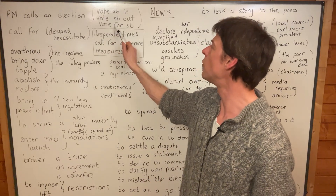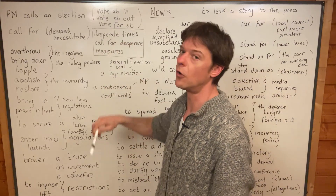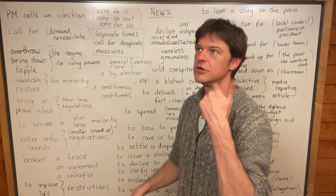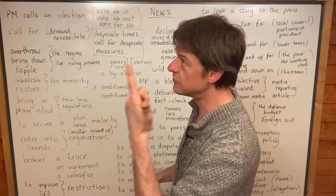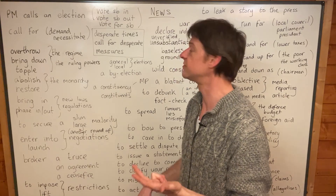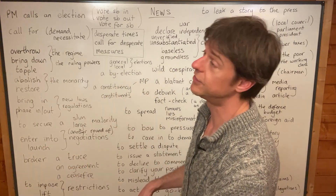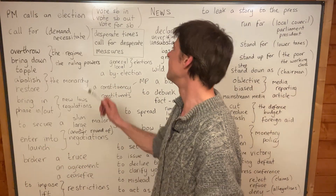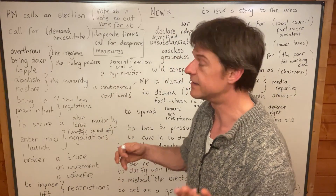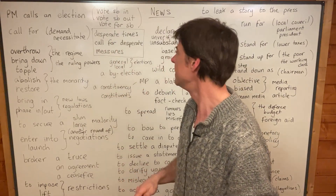We say 'vote for somebody'. So you vote for the Conservatives in this country maybe, or you can vote for Labour, you can vote for the Liberal Democrats, you can vote for the UK Independence Party. There are a few different parties you can vote for in the UK.